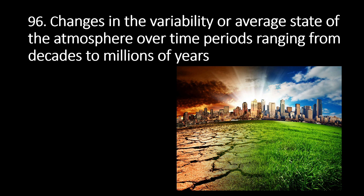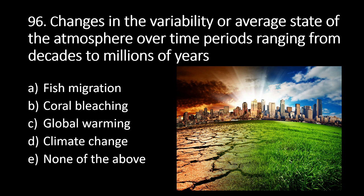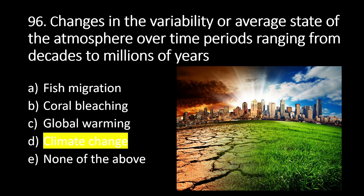Number 96: changes in the variability or average state of the atmosphere over time periods ranging from decades to millions of years. A. Fish migration, B. Coral bleaching, C. Global warming, D. Climate change, E. None of the above. The answer is D. Climate change. Climate change refers to changes in the variability or average state of the atmosphere over time periods ranging from decades to millions of years.